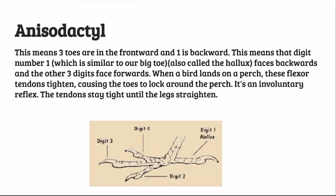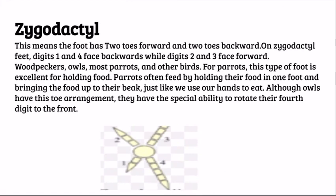Let's move on to zygodactyl. Zygodactyl means two toes forward and two toes backward. On zygodactyl feet, digits one and four face backwards while digits two and three face forward. Woodpeckers, owls, and most parrots and other birds have these types of feet. It enables a stronger grip on a branch. For parrots, this type of foot is excellent for holding food — parrots often feed by holding food in one foot and bringing it up to their beak, just like we use our hands to eat.